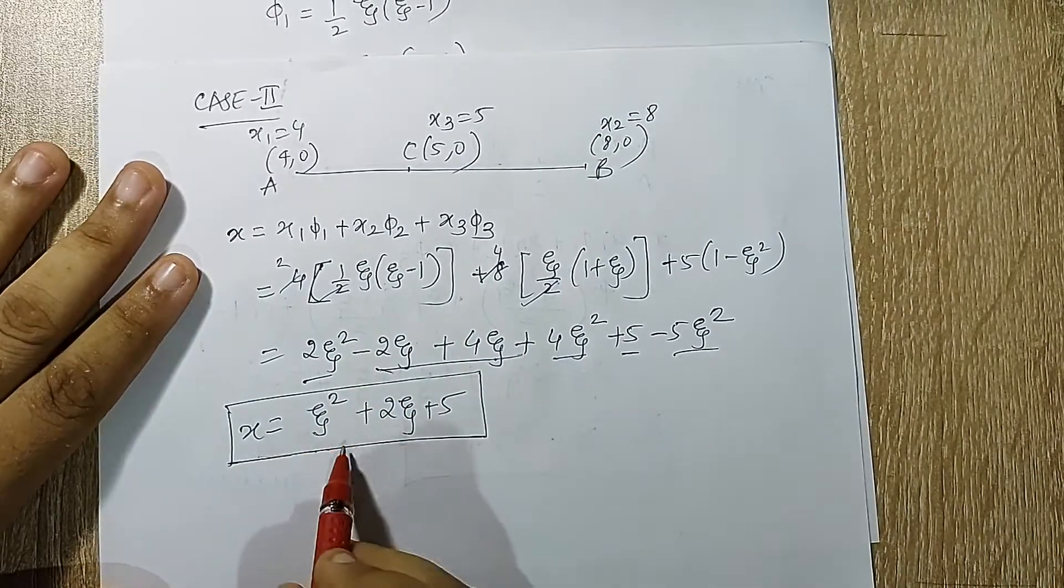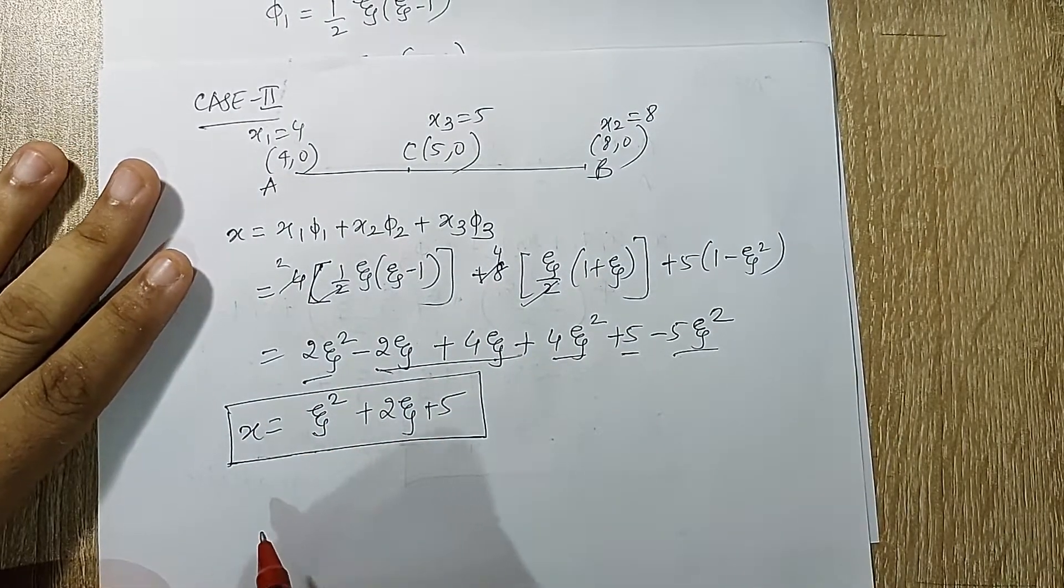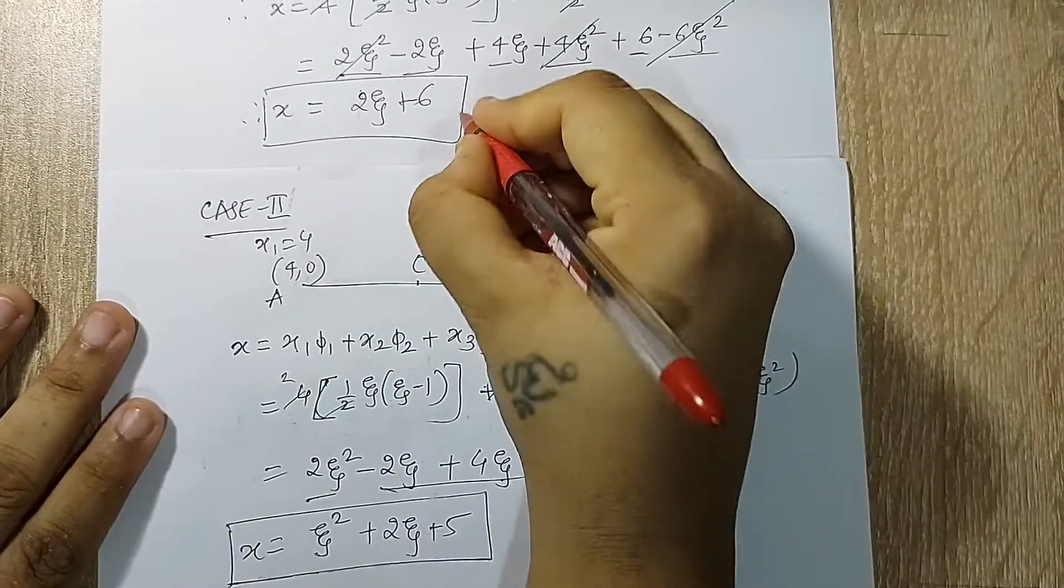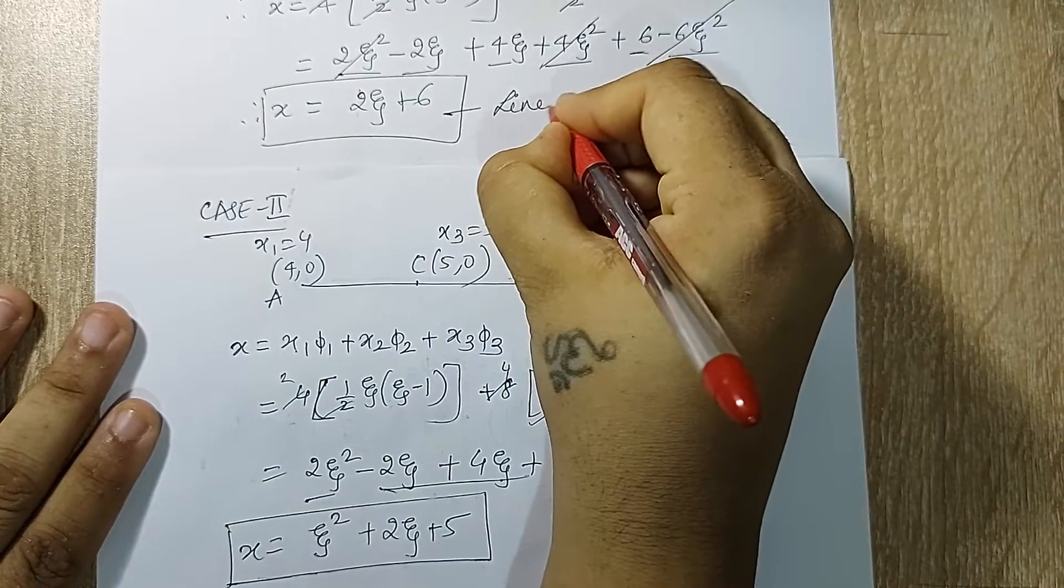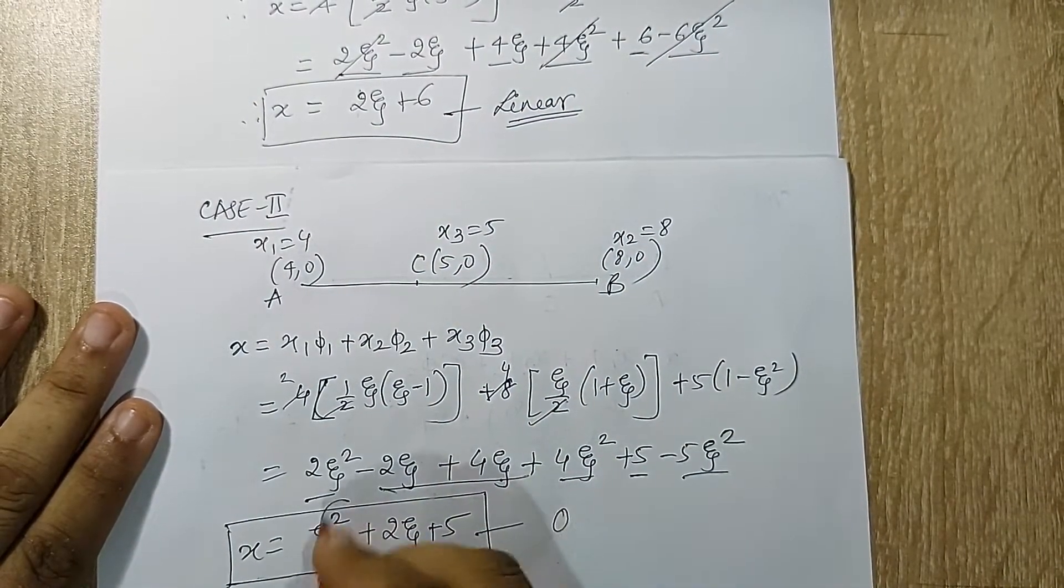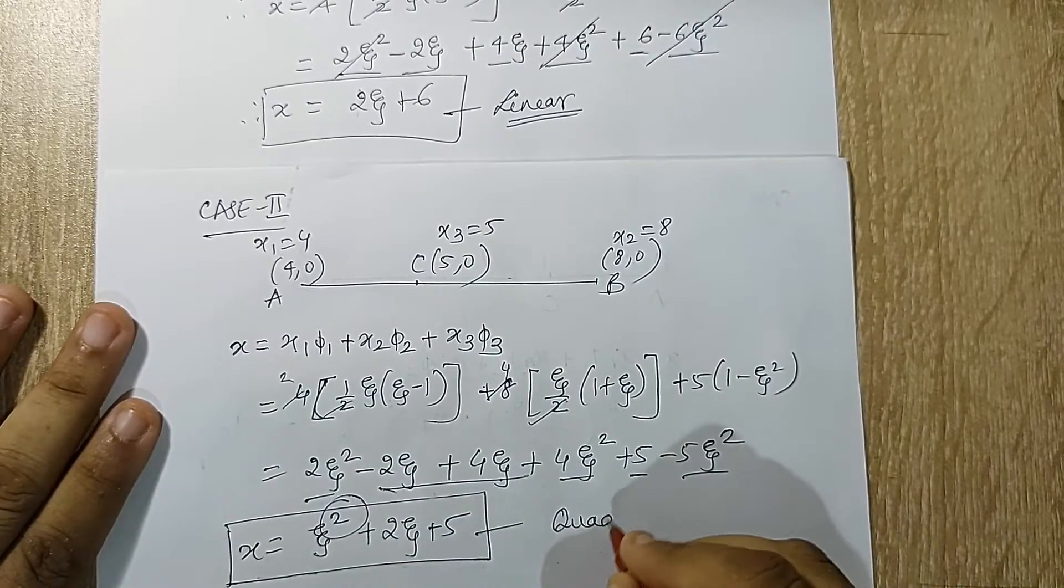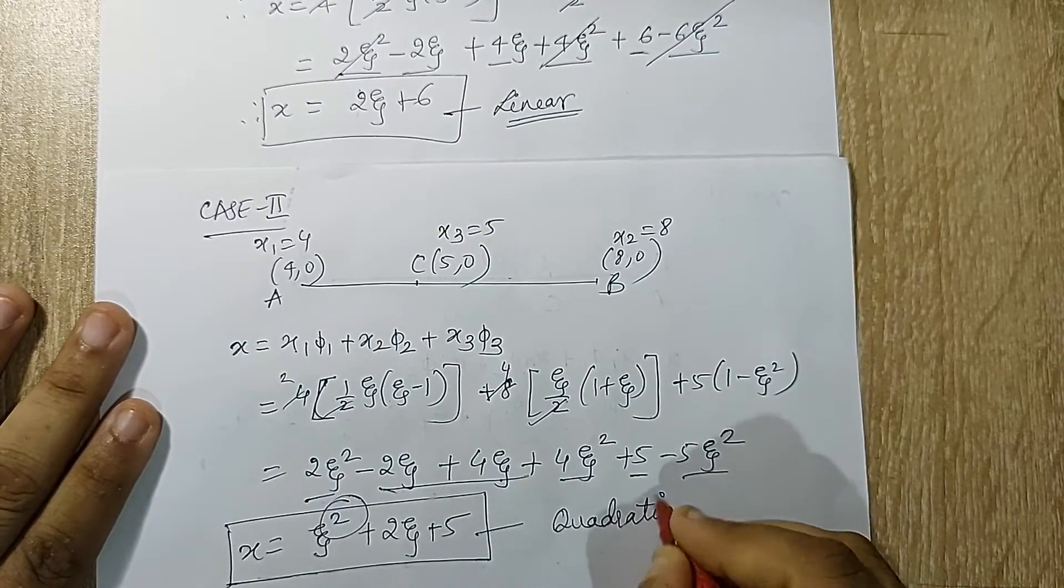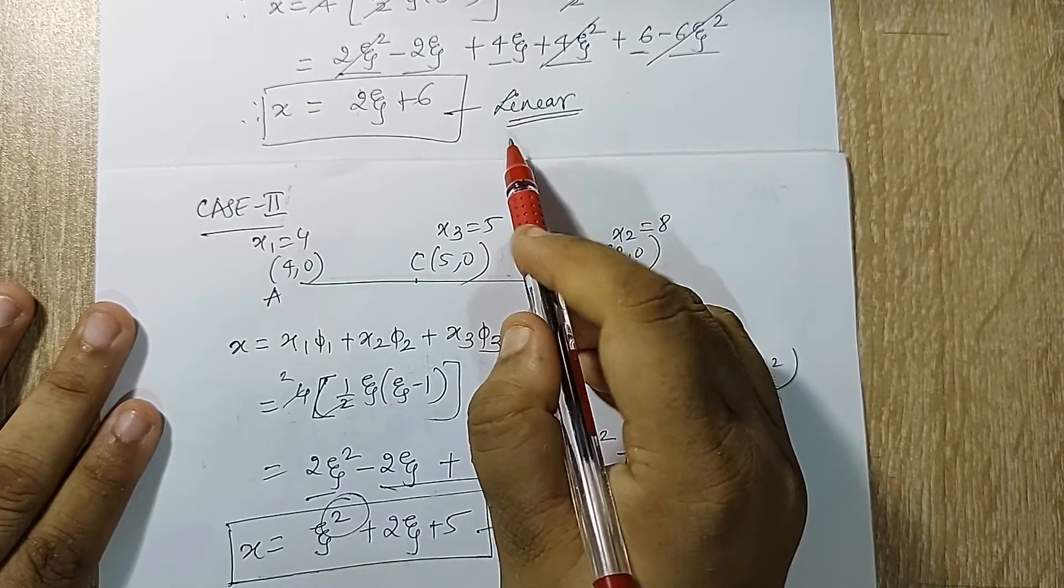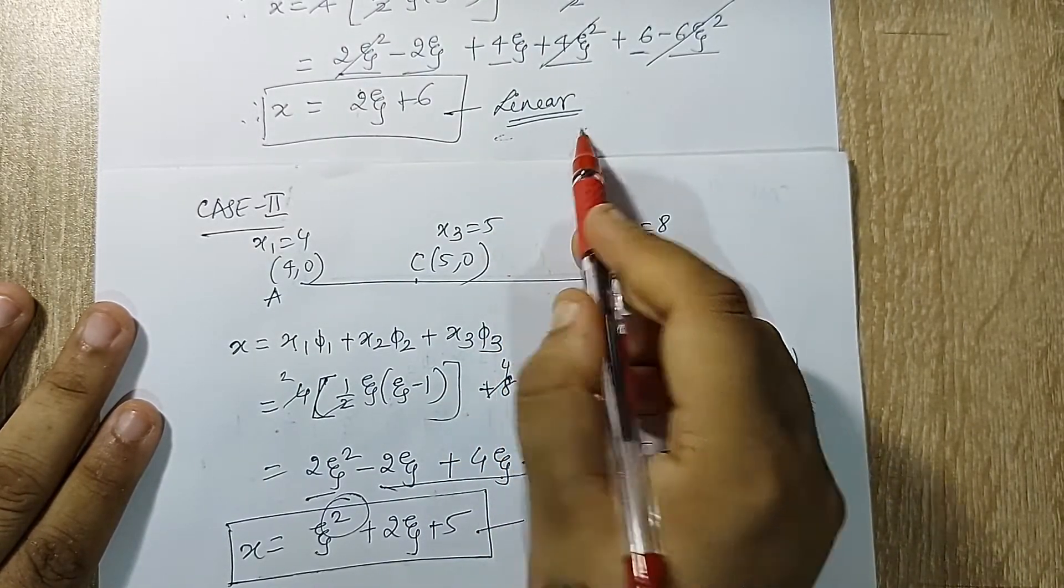Now if you compare the two answers of case 1 and case 2, you can see that this is a linear equation which I had obtained, or a linear relationship. Here you can see it's a quadratic relationship. It was asked that I am supposed to comment on the answer, so I can just say that when C is at (6,0) I get a linear relationship, when C is at (5,0) I get a quadratic relationship.